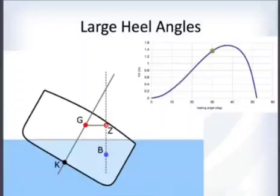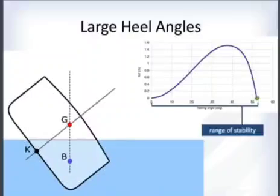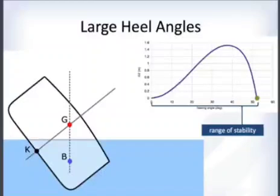The center of buoyancy moves far off the centerline and the geometry of the underwater part of the ship changes dramatically — at some point the deck goes underwater. Eventually, when G and B are vertically aligned again, the ship is technically back in static equilibrium.